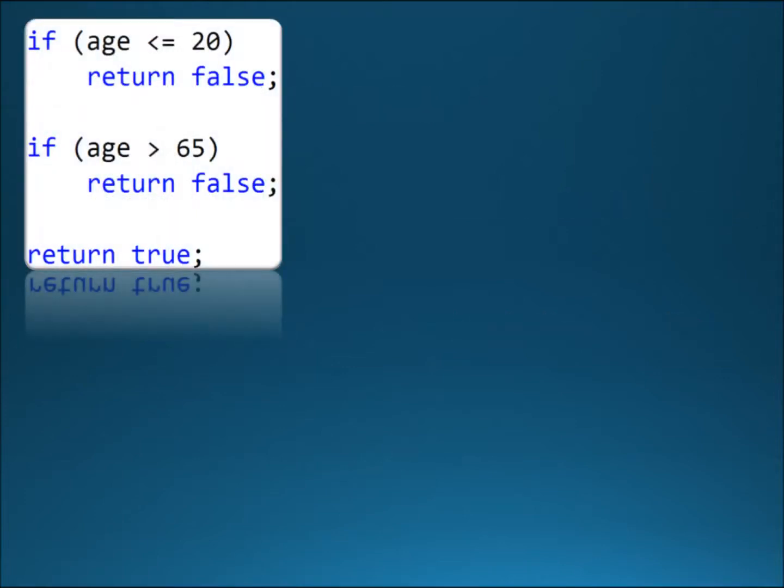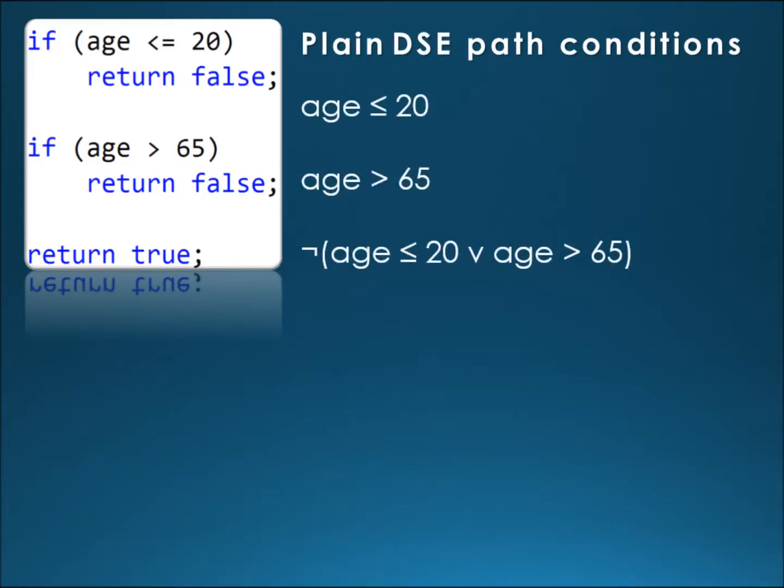I have already shown you an example of boundary values instance, but it was only partial. Let's explore it further to get the whole picture. Have a look at the set of constraint systems obtained from this method, also called path conditions, because these constraint conjunctions form a condition that needs to be fulfilled by the program inputs to follow given program path. Note we have seen these particular path conditions already, only in a little bit different form.